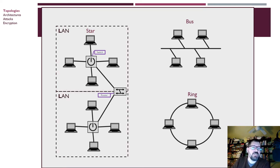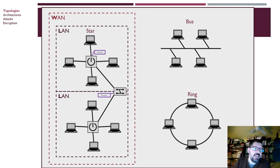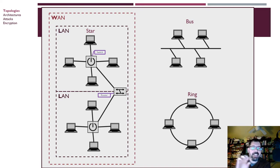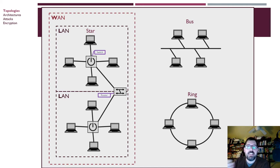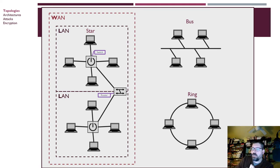A single star topology is referred to as a LAN, a local area network. When you interconnect different LANs, it typically becomes a wide area network, though you can have many LANs within a small geographic area like a college campus. Typically when traversing long distances, a router bridges your local area network to the wider internet. There are lots of ways to connect to the internet, but understanding that is not a critical objective in this course.